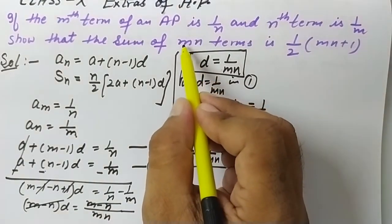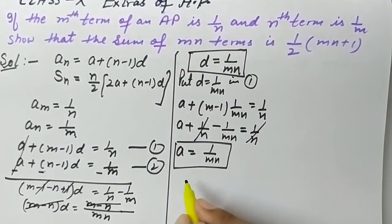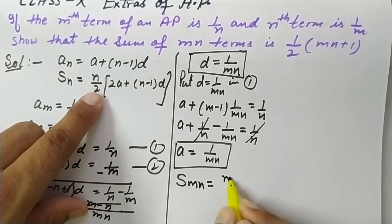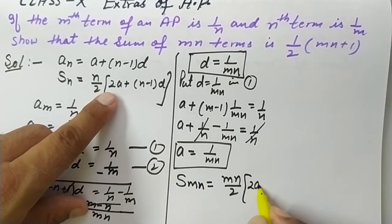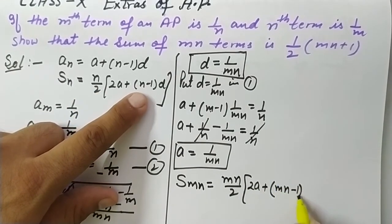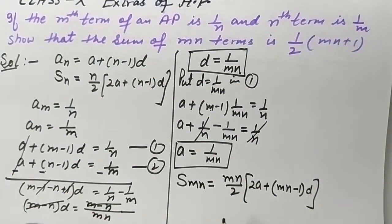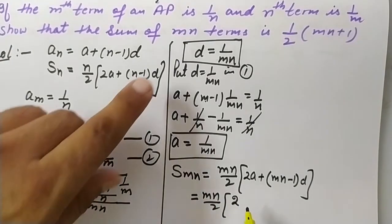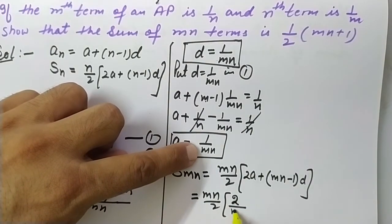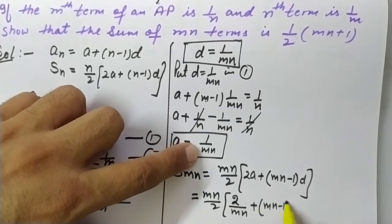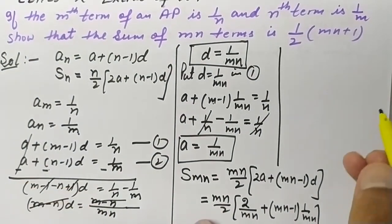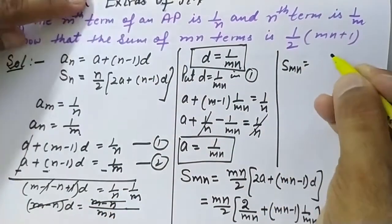The question asks us to find the sum of mn terms. Using the sum formula with n replaced by mn: S(mn) = mn/2 × [2a + (mn - 1)d]. Now filling in the values of a = 1/mn and d = 1/mn: S(mn) = mn/2 × [2/mn + (mn - 1) × 1/mn].